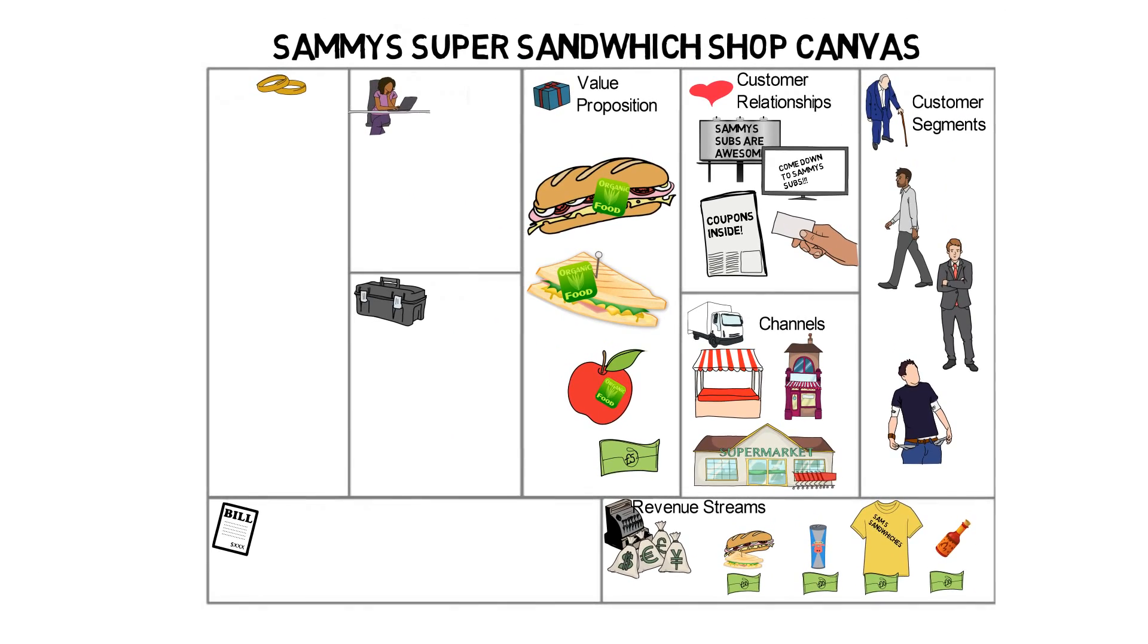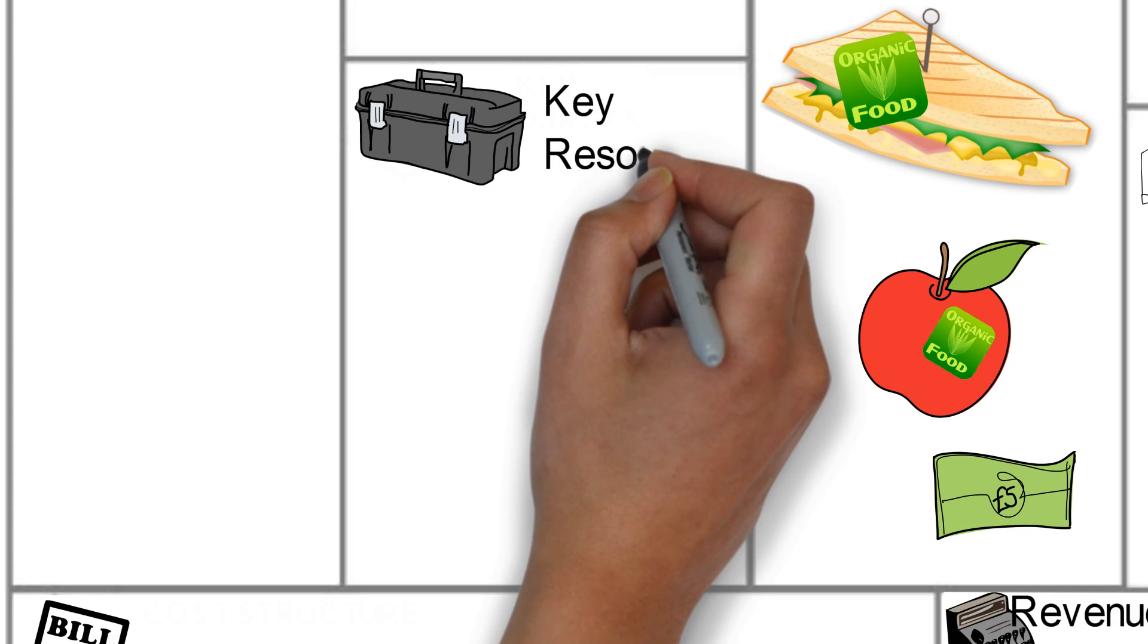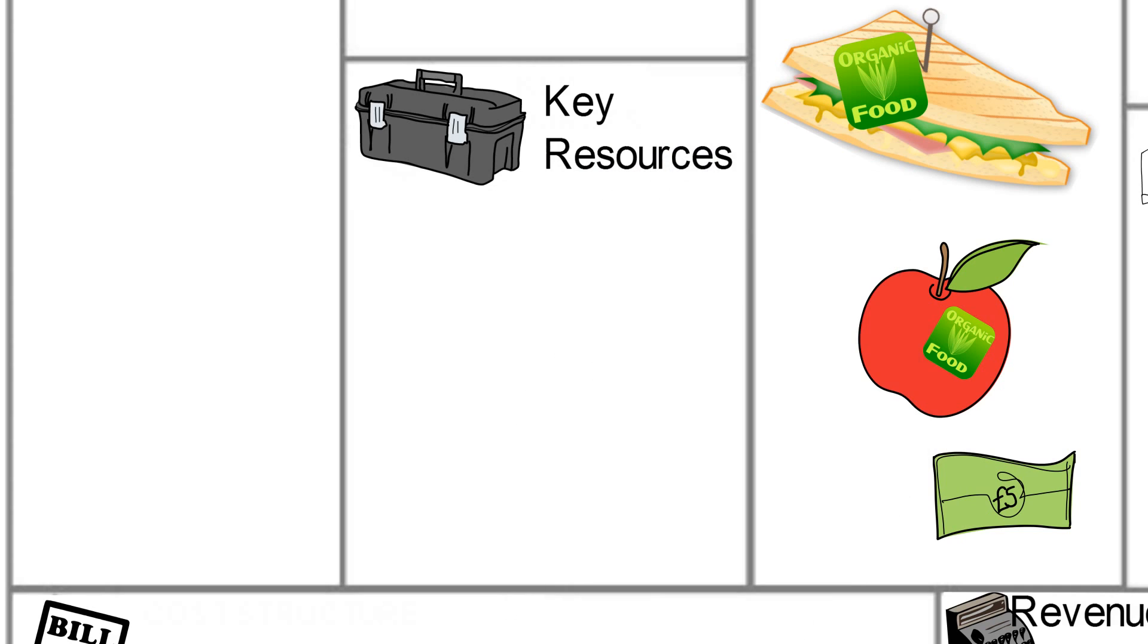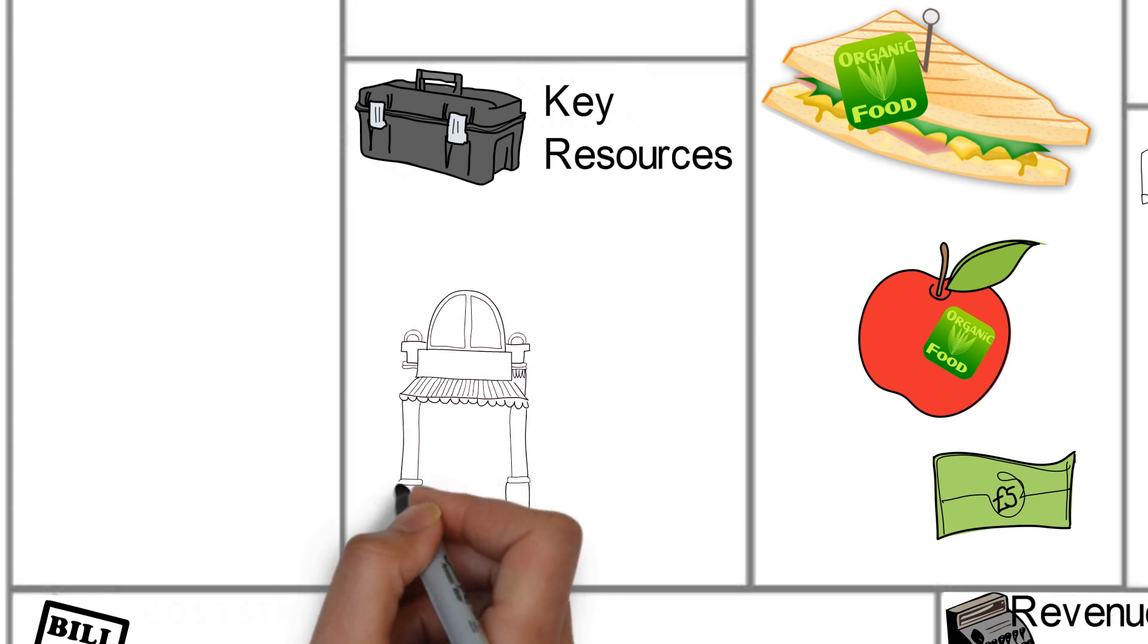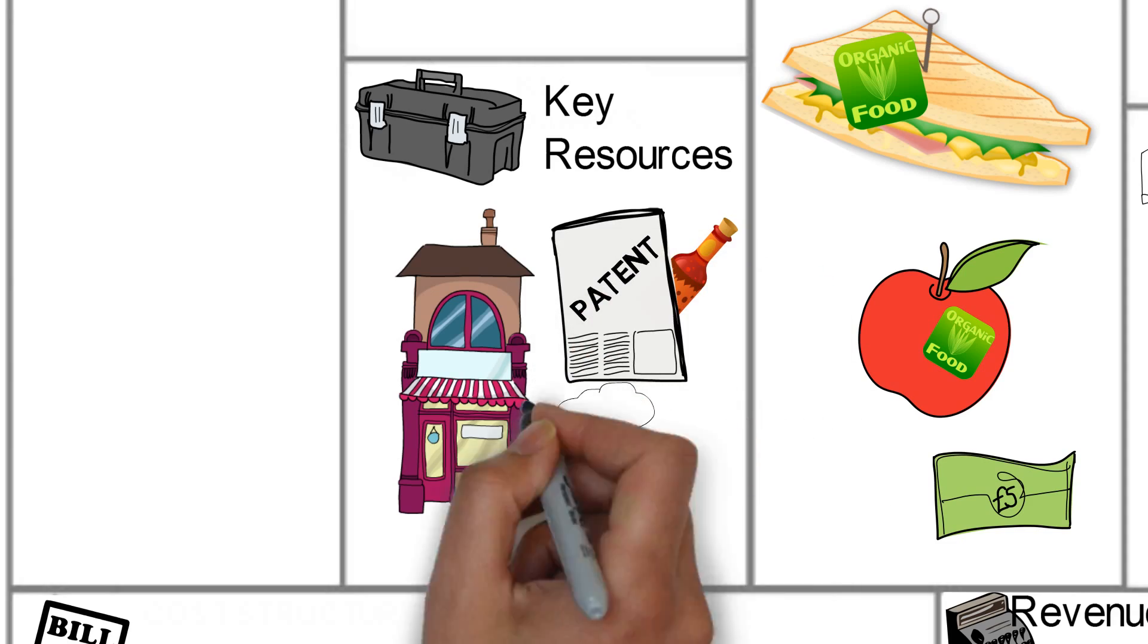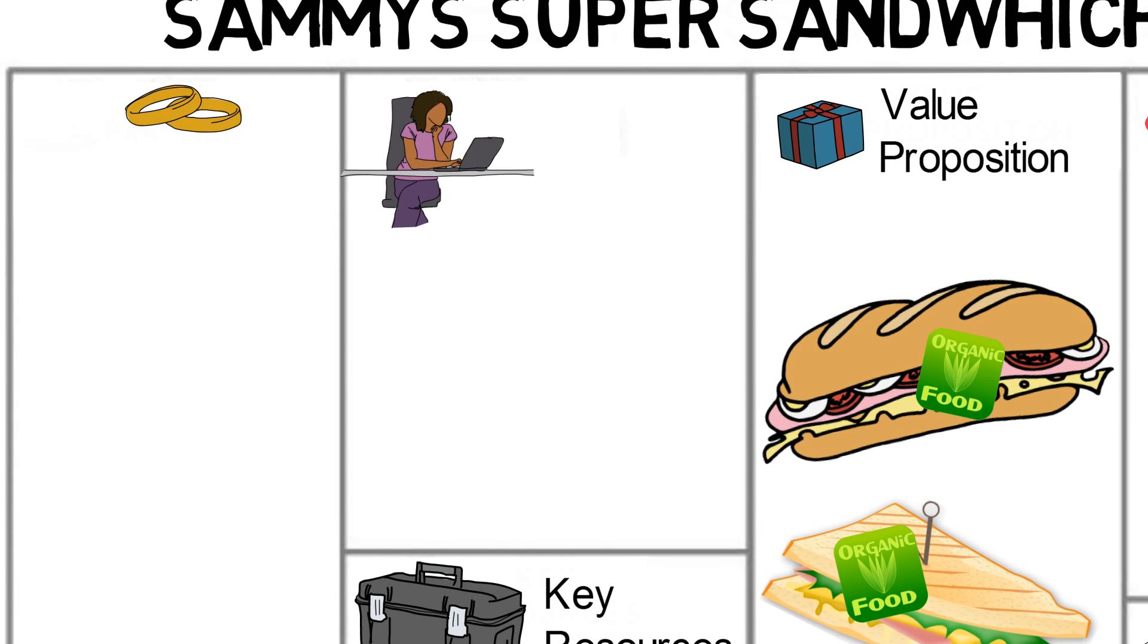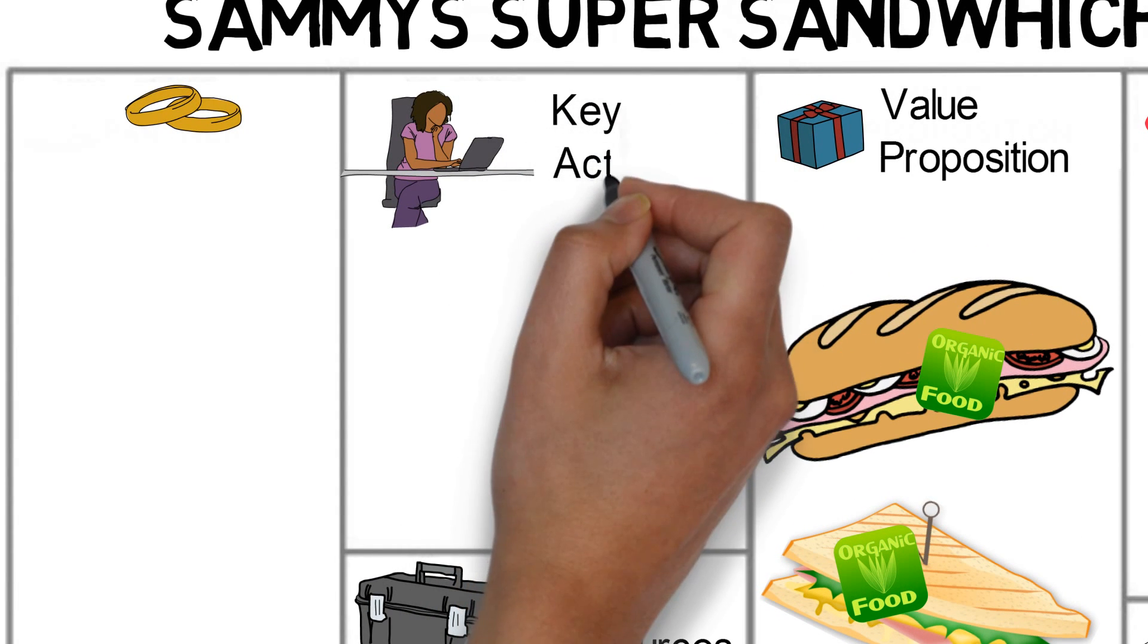After celebrating how much money Sammy is going to make, it is time for him to focus on his business and how he's actually going to pull it all off. First, Sammy must identify the key resources he's going to need to make it all happen. This will include his store locations, protecting his secret formula, and all the elite chefs at his disposal.